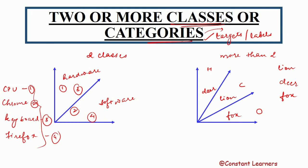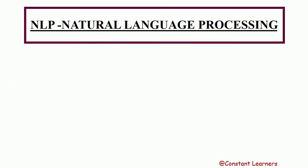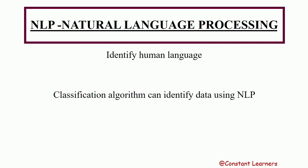Classification algorithm is an NLP — natural language processing — task, meaning it can identify human language. It can identify written or spoken text just the way humans write or speak. It does not need data in an organized or tabular format; it can work on data in any form using natural language processing.